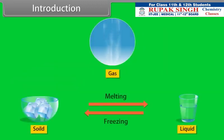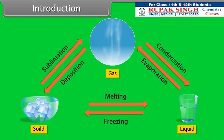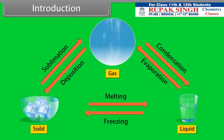Equilibria are solid and liquid, liquid and gas, and solid and gas. In homogeneous equilibria, the reactants and the products are in the same phase, whereas in heterogeneous equilibria, the reactants and the products are in different phases.